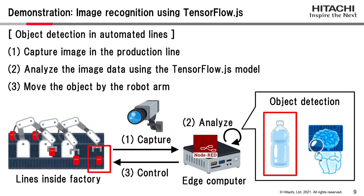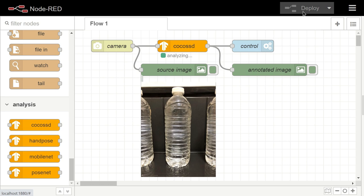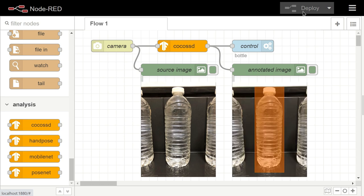This slide illustrates an advanced demonstration: object detection in automated lines. In this factory, cameras are capturing images in the production line. Using the captured images, the edge computer categorizes objects using a TensorFlow.js model. When the target object is detected, the robot arm moves the object to another line. This is the actual Node-RED flow — after the camera connector retrieves the image, the TensorFlow.js connector analyzes it. When a bottle is detected, Node-RED controls the arm immediately.